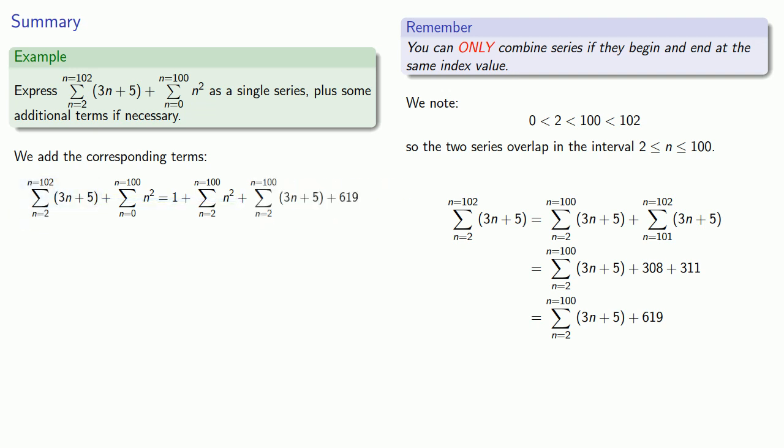Finally, because the two series have the same beginning and the same ending, we can combine them into a single series by combining the terms n squared plus 3n plus 5. We can also combine the numbers portion 1 and 619, and that gives us an expression for our summed series.